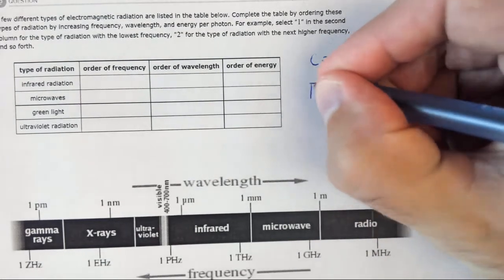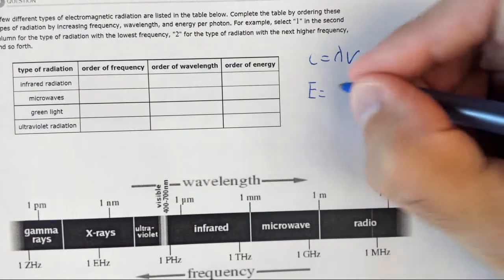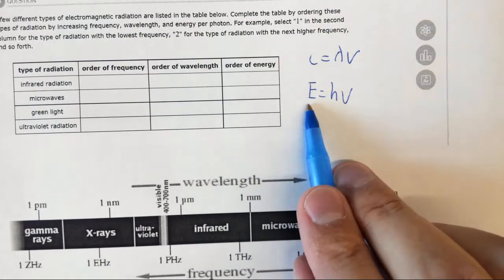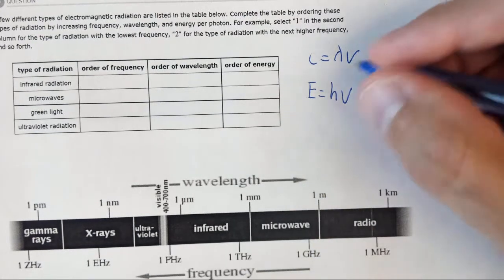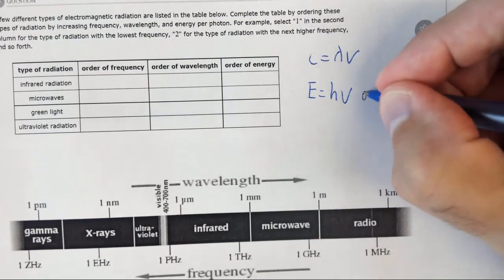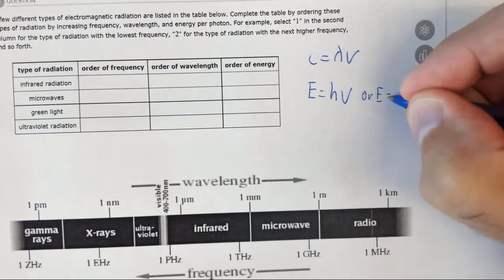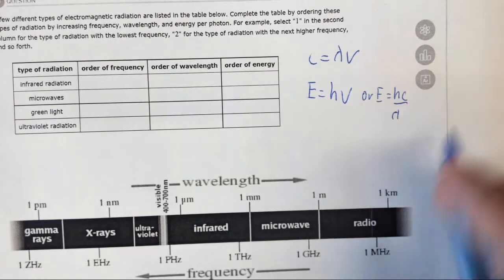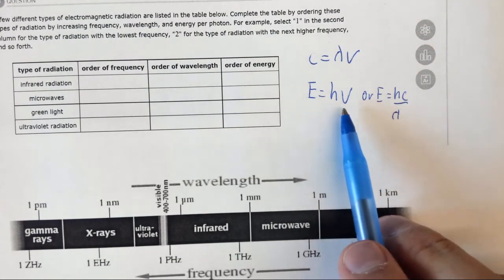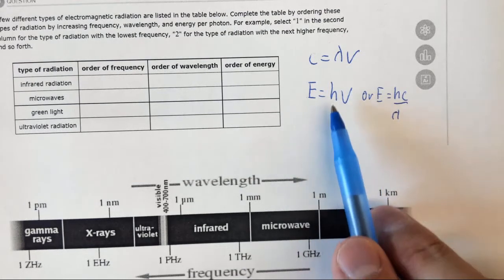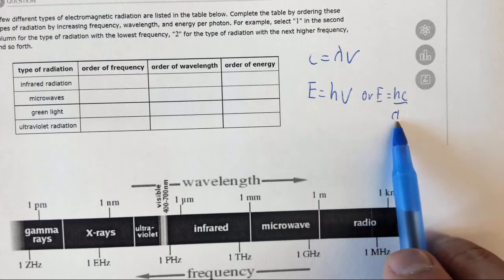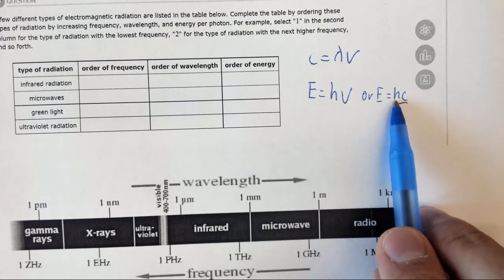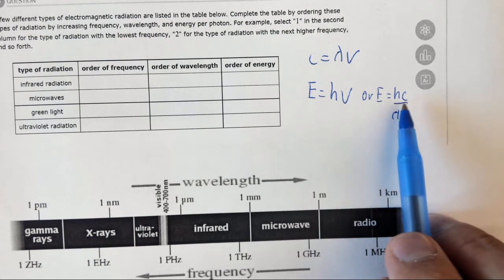And also E equals h nu. So energy equals Planck's constant times the frequency. And if we rearrange this equation, E equals hc over lambda. Again, energy and frequency are related by a constant, in this case Planck's constant, or two constants in the case of wavelength and energy because you have Planck's constant and the speed of light which is a constant.